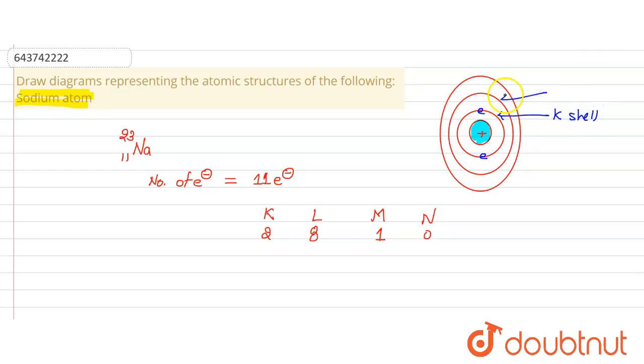This is the L shell and this is M shell. This is M shell and here number of electrons in L shell is 8.